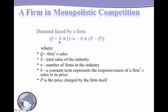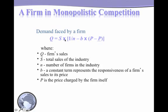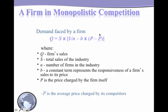The quantity sold by the firm, q, is going to increase if the market size S increases — it enters with a positive sign. The term is S/n, so as the number of firms n increases, the firm has a smaller share of the pie and its sales decline. P is the firm's own price and it enters with a negative sign — the higher your price, the lower your sales. P-bar is the average price charged by competitors; the higher their prices, the higher your sales. So really what matters is the difference P minus P-bar, where b is a constant indicating how responsive firm sales are to price differences.